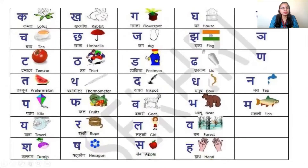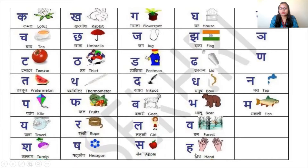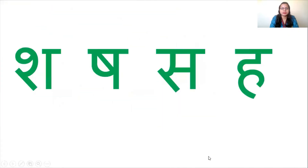We have completed the first, second, third, fourth, fifth, and sixth lines. The seventh line is going on — in the last class we completed letters sha and sha. Today we are going to do two more new letters: sa and ha. We will do these two letters in detail.